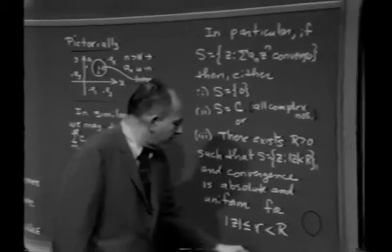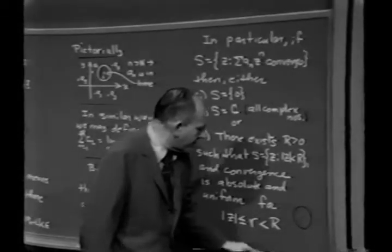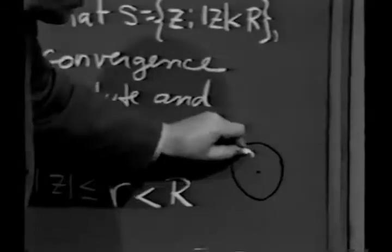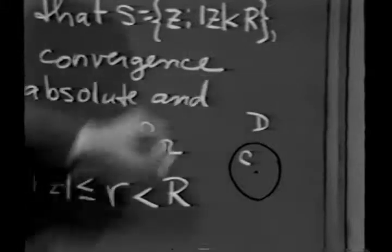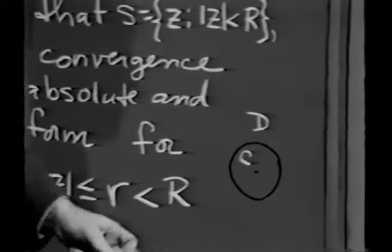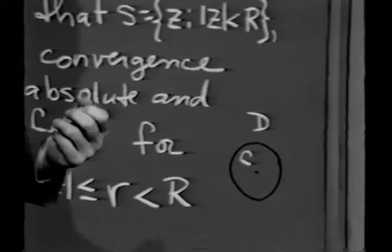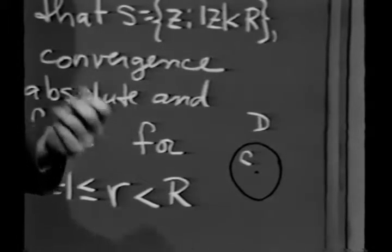What I'm saying is, there exists a circle such that the power series will converge every place inside here. It will diverge every place outside here. And what happens on the boundary must be investigated separately, again, just as in the real case.